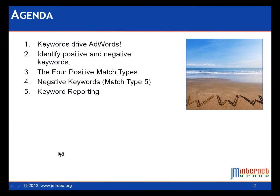Let's look at our agenda for this session. The first thing we're going to learn is how keywords drive AdWords — we're going to understand that keywords drive the whole process. Secondly, we're going to talk about identifying positive and negative keywords. Third, we're going to look at the four positive match types. Next, we're going to talk about negative keywords, which is really match type number five. And then we're going to end up with keyword reporting, because you can actually look in AdWords and see what are the match types and the exact phrases that Google matched your ad for.